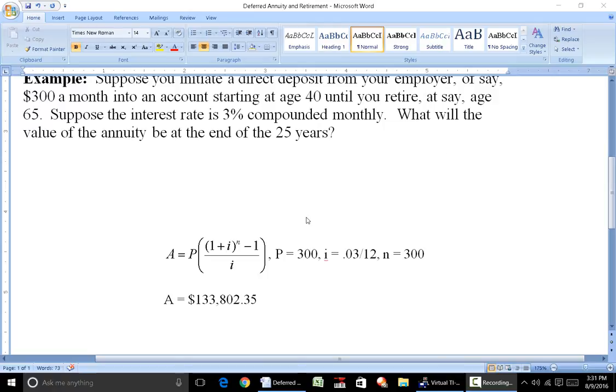I is the interest rate compounded, in this case, 12 times a year. So it's 0.03 divided by 12. And the number of payments n is going to be 300. That's going to be 25 years, 12 payments per year, so it's 25 times 12. That's 300. So the value that you get is $133,802.35.